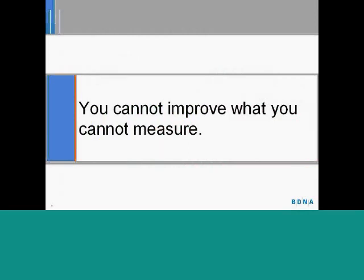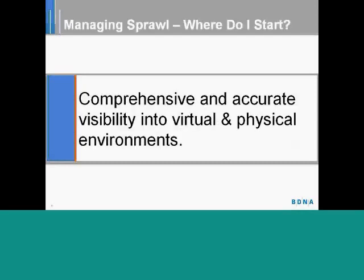This is a very old truism — everybody knows that you cannot improve what you cannot measure. If you want to improve employee productivity, you need to be able to measure employee productivity. In order to move from A to B, you need to be able to measure A and you need to be able to measure B, and only then will you be able to design a path that will lead you from the starting point to your end goal. That leads us to the conclusion that if we want to manage virtual scroll, the place to start is by gaining comprehensive and accurate visibility into virtual and physical environments. If we don't have that, we don't have any baseline from which we can start and improve the adverse effects of virtual scroll.